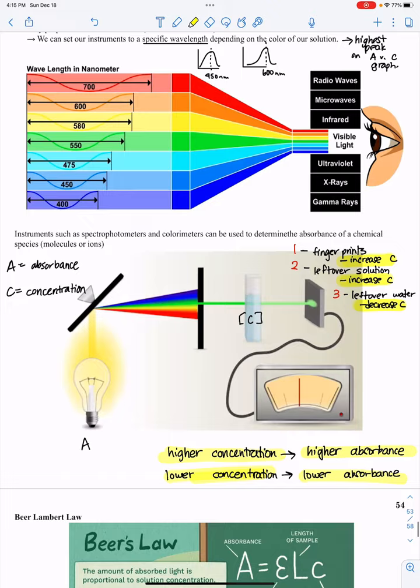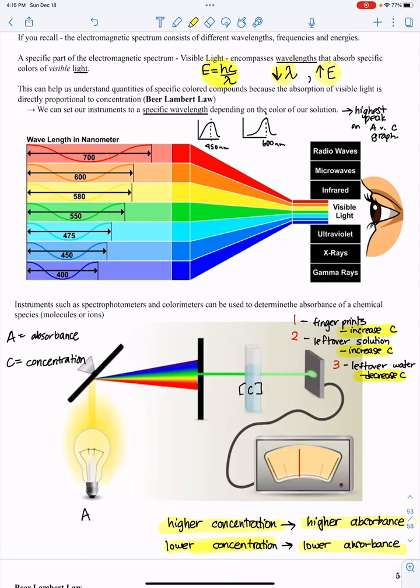We can set specific instruments to wavelengths of light depending on the color of the solution. Try and sketch these little graphs. You'll get absorbance versus wavelength, and you'll get these graphs. The highest part of that graph is the wavelength that you set all solutions to later. For example, this graph's highest point is 450 nanometers, but this graph on the right, its highest is 600 nanometers.